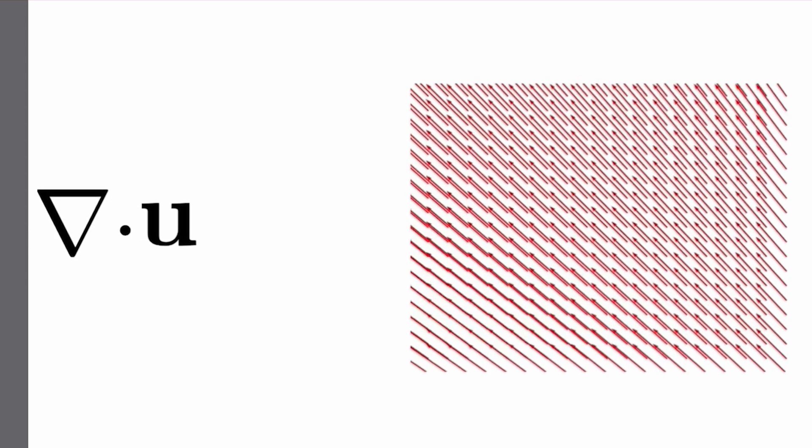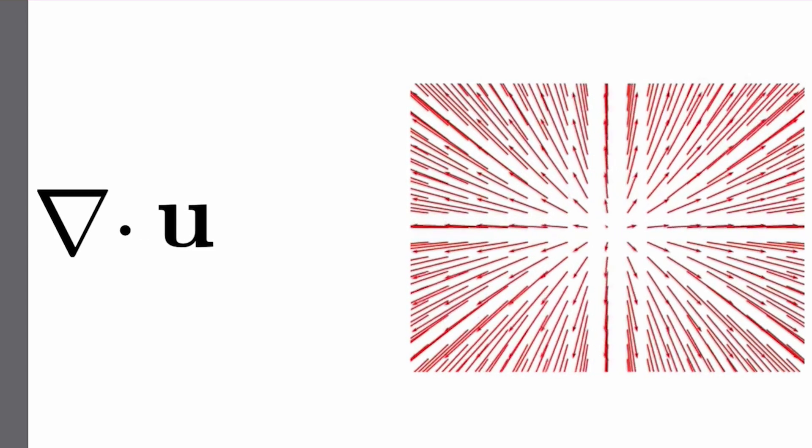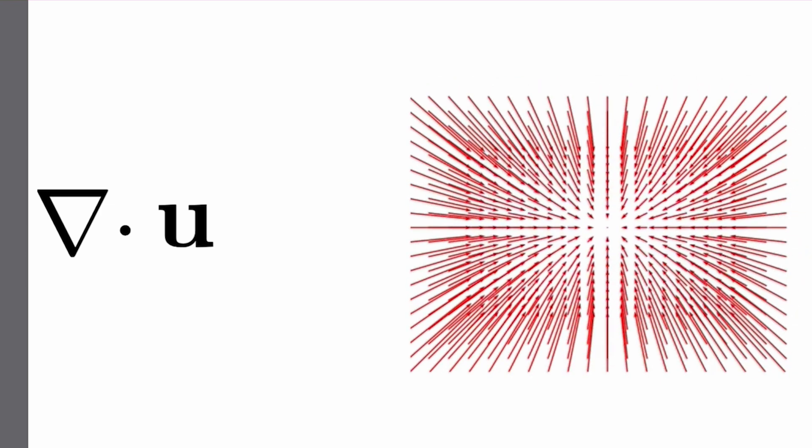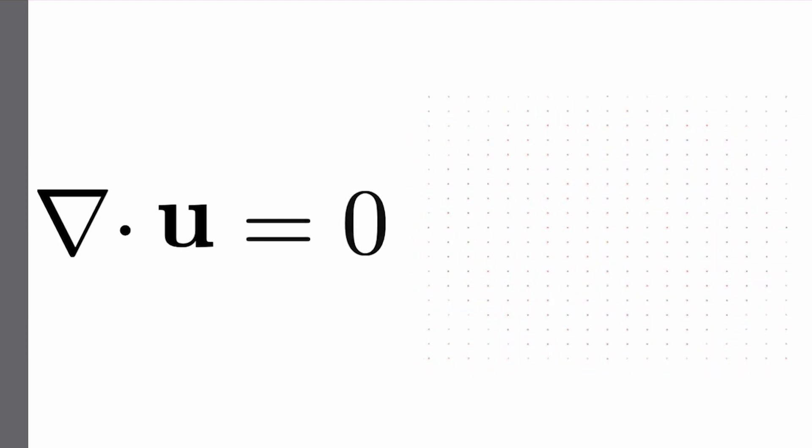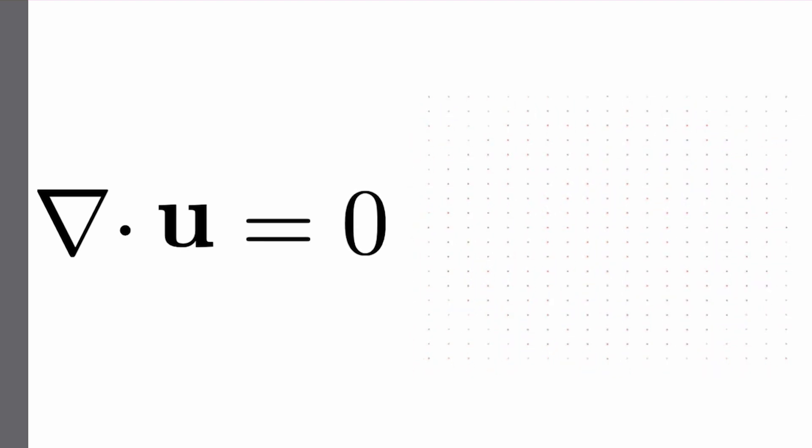The divergence describes how much vector lines spread out or close into each other at any given point in space. Now, our equation states that the divergence of velocity is zero everywhere in space.